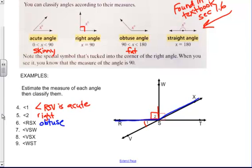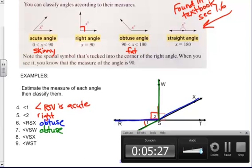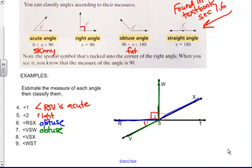Number 7, VSW. V, I'm going to use a different color, VSW. This is also a fat angle. This is also obtuse. All right. Angle number 8, angle VSX. Angle V, I'm going to use the black marker. V, S, X. This forms a straight line, so this is a straight angle.